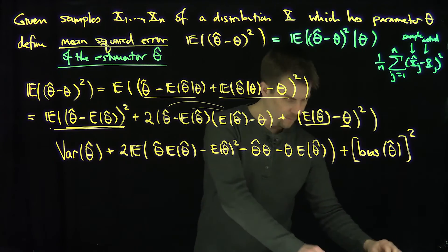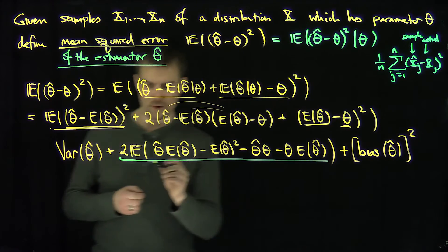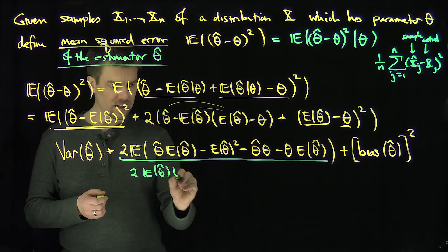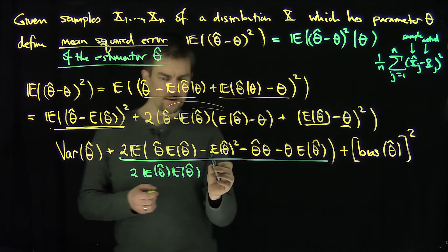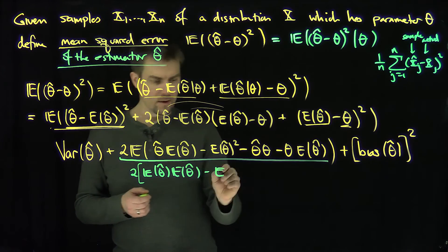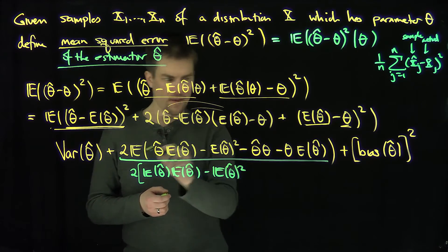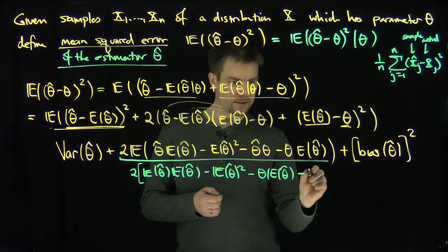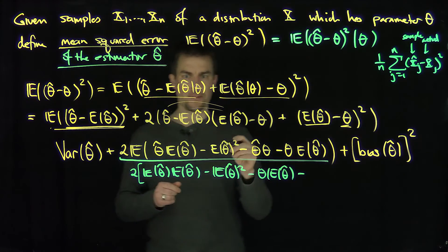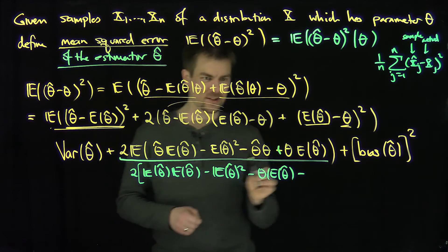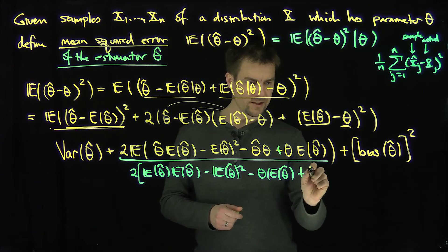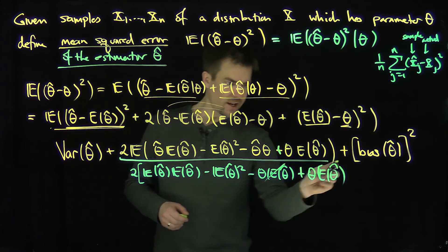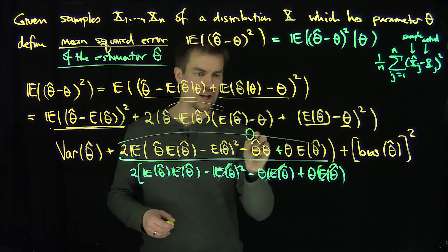Let's simplify the middle cross term. It gives four terms: expected value of theta-hat times expected value of theta-hat, minus expected value of theta-hat squared, minus theta times expected value of theta-hat, plus theta times expected value of theta-hat. Those terms cancel and those terms cancel — so these cross terms are equal to zero.